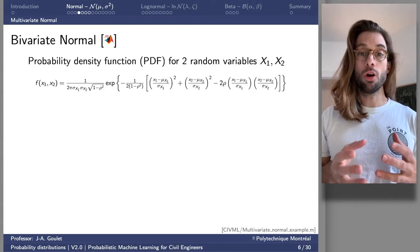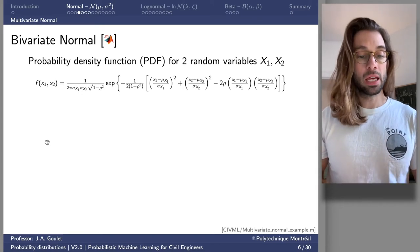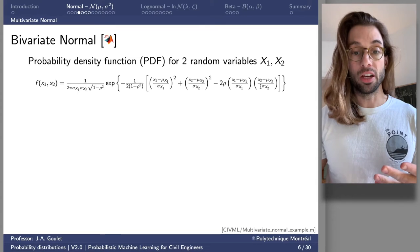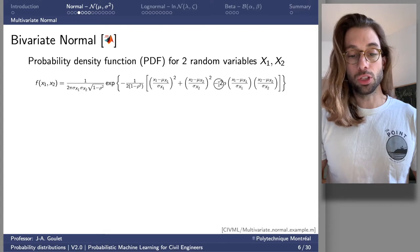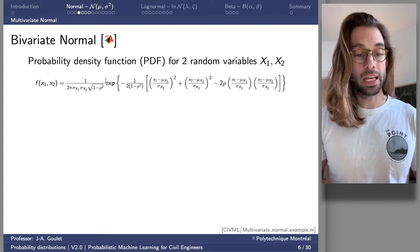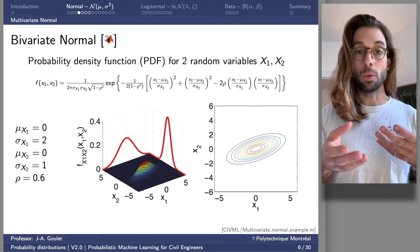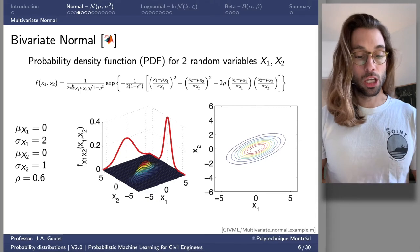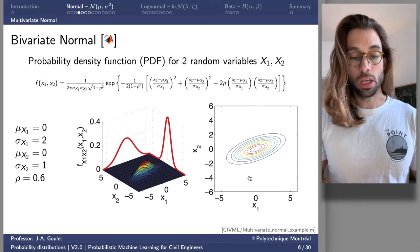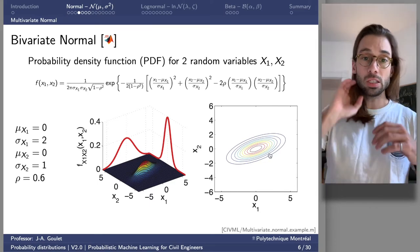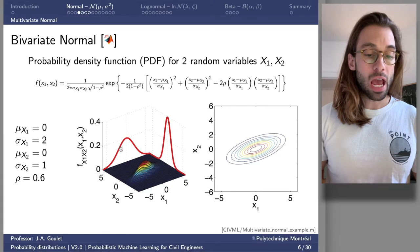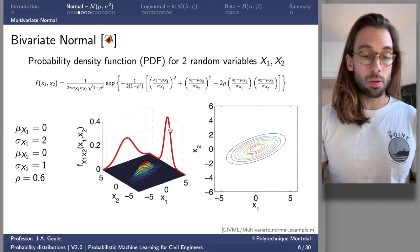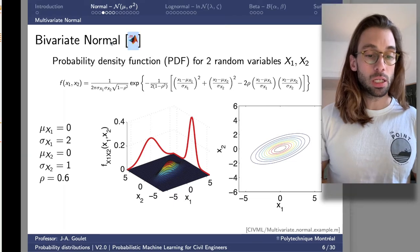For the bivariate normal PDF, the analytical formulation has one part controlling the value for X1, one for X2, and one controlling the linear dependency between X1 and X2 — plus the normalization constant. Plotted as a surface or contour map, both representations contain the exact same information. The marginal PDFs for X1 and X2 are shown in red.